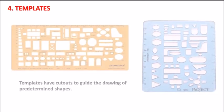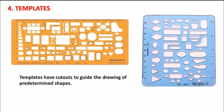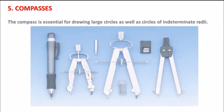Then we have templates. They are cutouts to guide the drawing of predetermined shapes. Then compasses. A compass is essential for drawing circles of indeterminate radii.